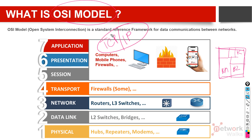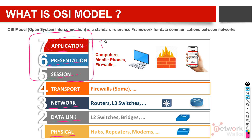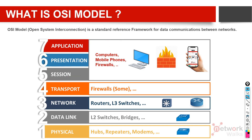There is another model called the TCP/IP model. In practice, we follow the TCP/IP model which has four layers, but for documentation and reference purposes, we always use the OSI model. The OSI model has seven layers: Physical, Data Link, Network, Transport, Session, Presentation, and Application. The top three layers — Session, Presentation, and Application — are usually grouped together and referred to as the Application layer, as they are merged in the TCP/IP model.